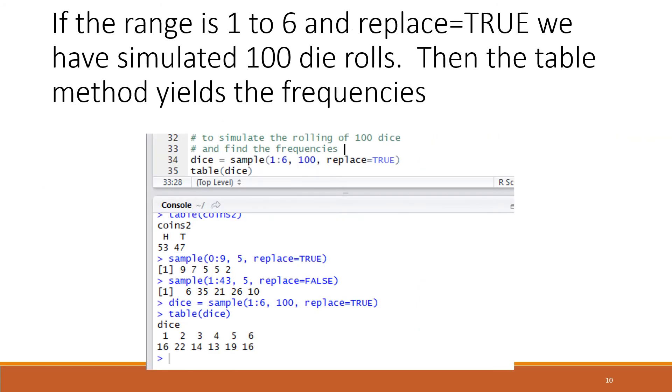Now we're simulating dice using the sample function. In line 34, it has three arguments. The first argument is the possible choices: when you roll a die it's 1 through 6, so 1:6 corresponds to the numbers 1 through 6. The second argument is how many samples we want, so we're asking for 100 samples, 100 rollings of the die. Then we say replace equals true so that when we've rolled a number, say a 3, we're allowed to roll it again in a later sample.